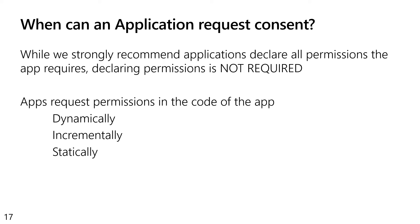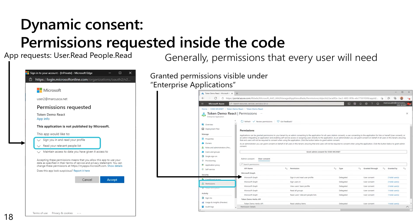Dynamic consent is the default. For example, my application is asking for user.read and people.read. When I first start the application, I see sign in and read your profile as well as read your relevant people list. My IT pro can go to the enterprise app blade, find my application, see the permissions that the application has been granted, and even see which users have granted that consent so far. This is our standard dynamic consent and we don't actually reference any APIs that might be declared in the application registration.